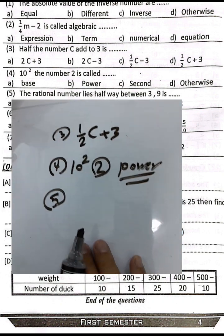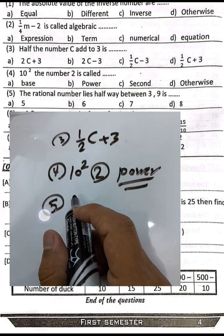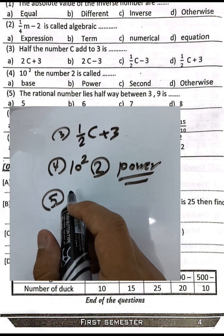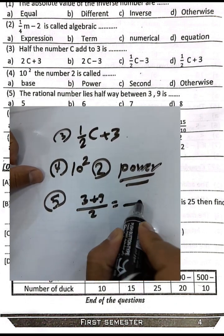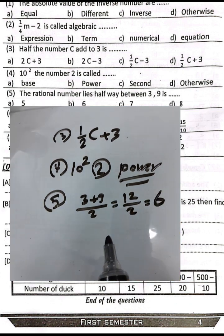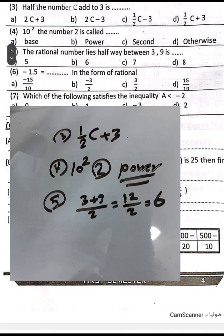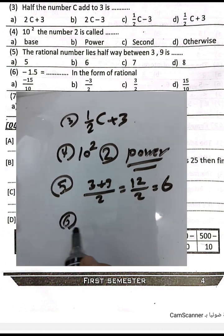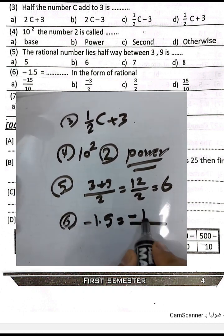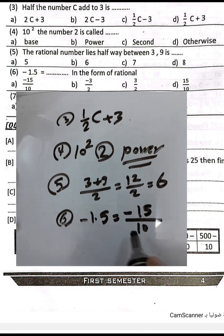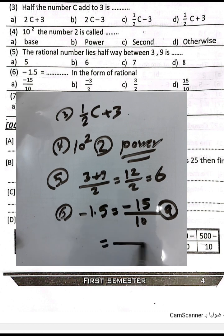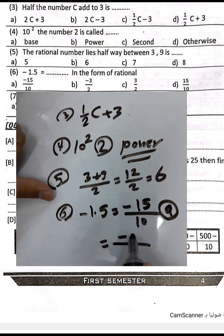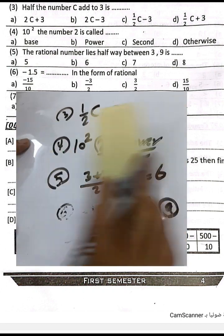Question number five: the rational number halfway between three and nine equals three plus nine divided by two, which is twelve divided by two, which equals six. Question number six: negative 1.5 in fractional form — 1.5 equals fifteen over ten. Simplify by dividing by five: fifteen divided by five equals three, ten divided by five equals two. The result is negative three over two.